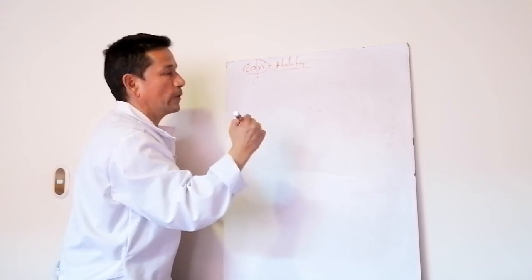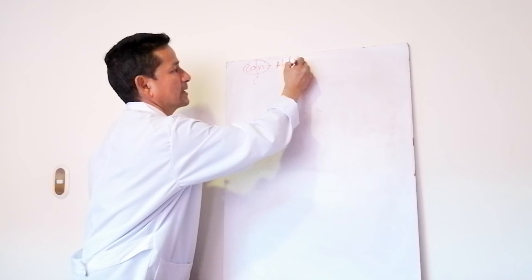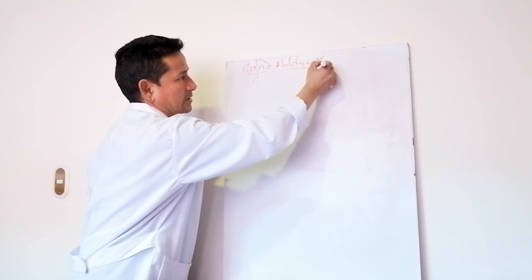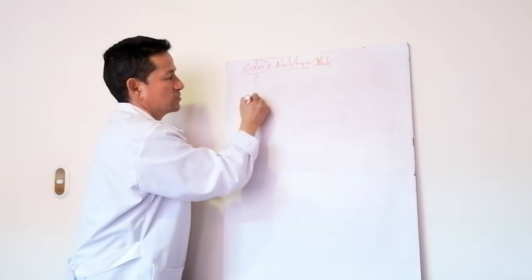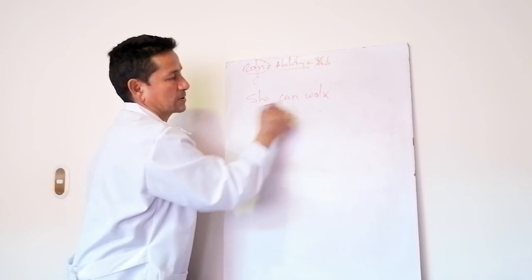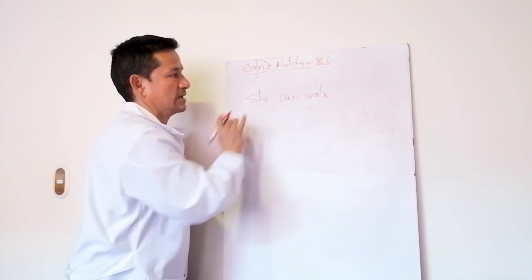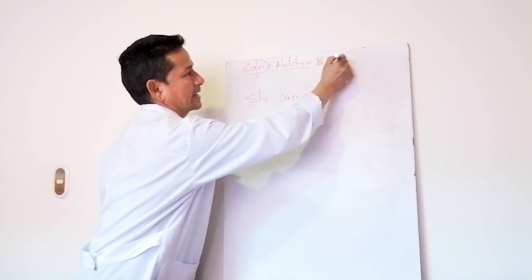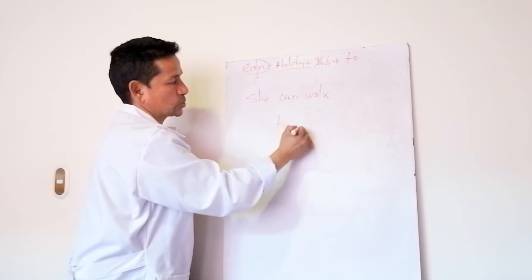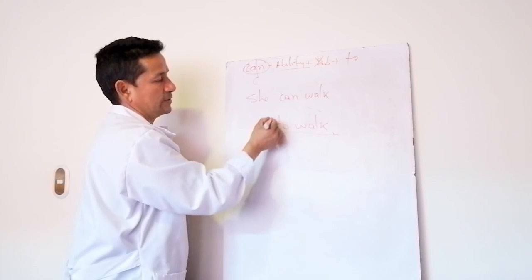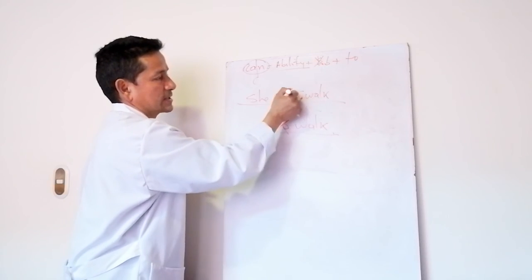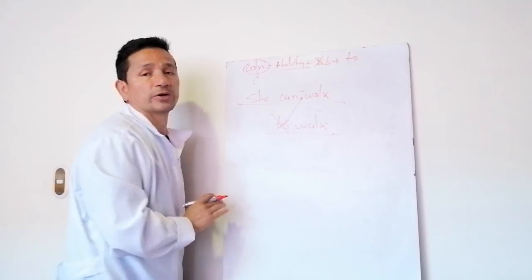CAN indicates ability — what one can do, one's power to do something. We also said that you do not add S to verbs with CAN. For example, 'she can walk' — here you do not add S to the verb for third person because CAN already carries it. Another thing: we do not place the word TO. To say 'to walk' you would say TO WALK, but with CAN it is not necessary. 'She can walk.' Done.